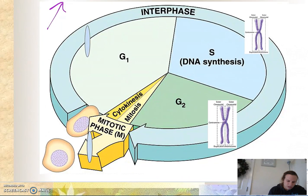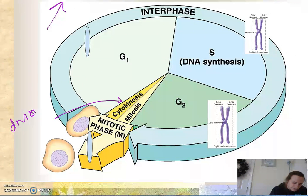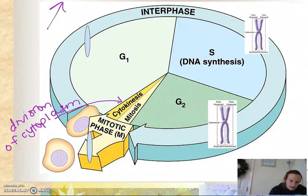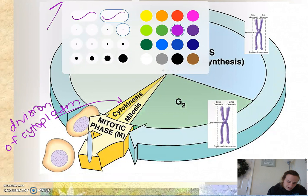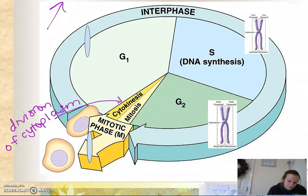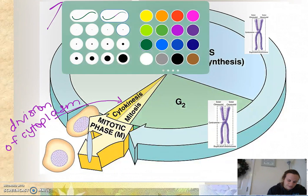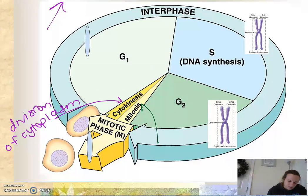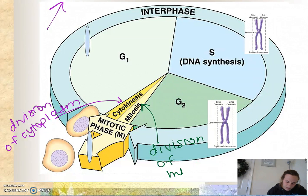Let's talk about cytokinesis first. Cytokinesis is the division of the cytoplasm, whereas mitosis is the division of the nucleus. Now both of these together are called the mitotic phase or the M phase.